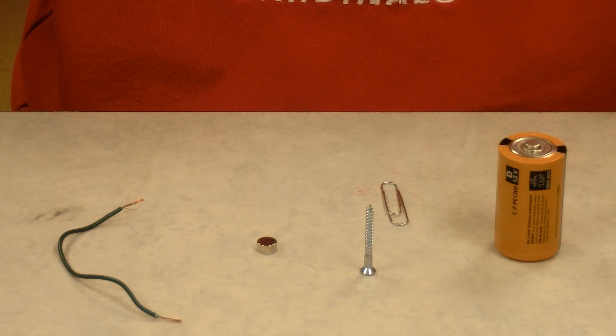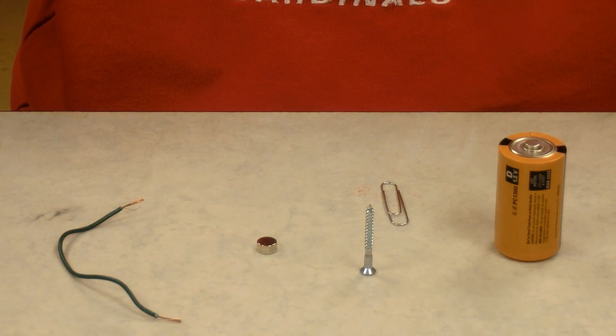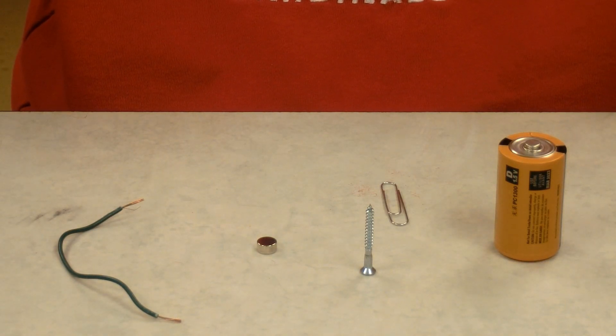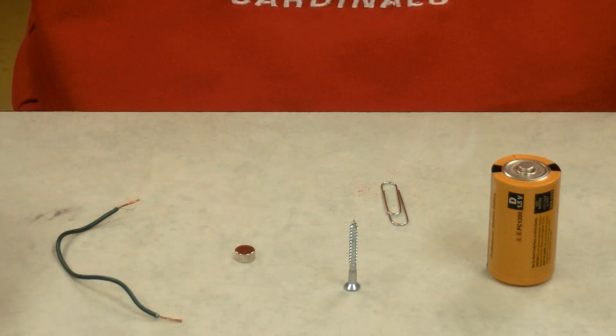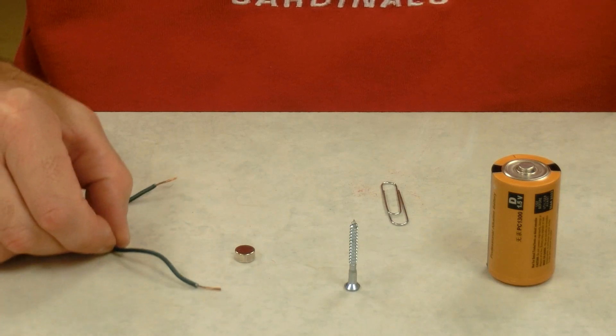The simplest motor you can make is called a homopolar motor. All we need to make this motor is a dry cell, a nail or screw, a neodymium magnet, and a piece of wire.